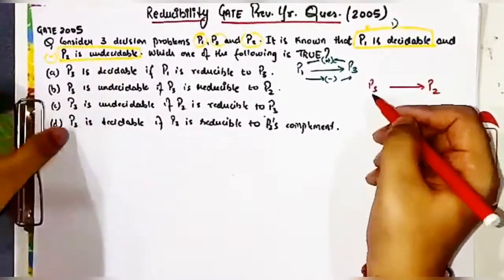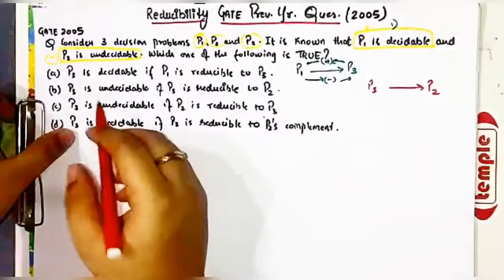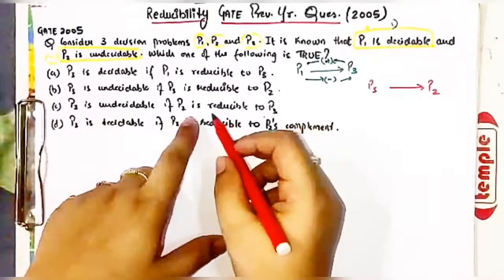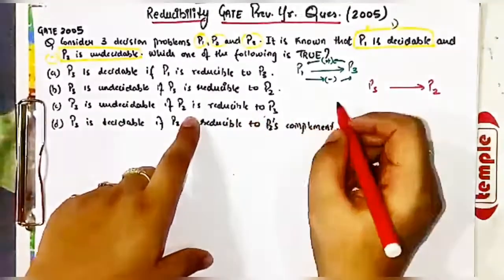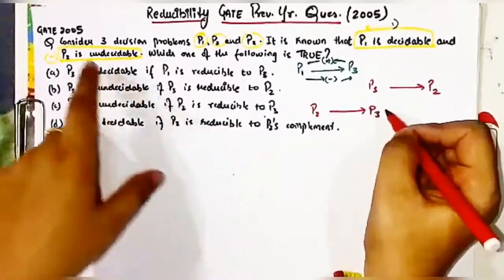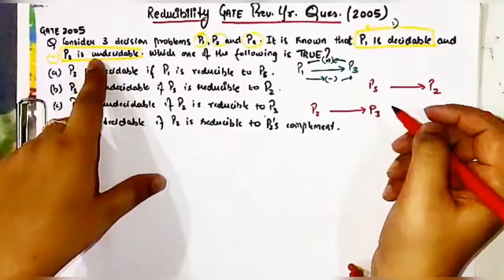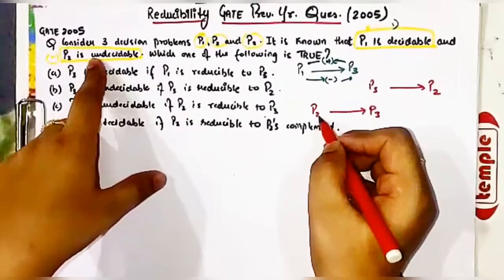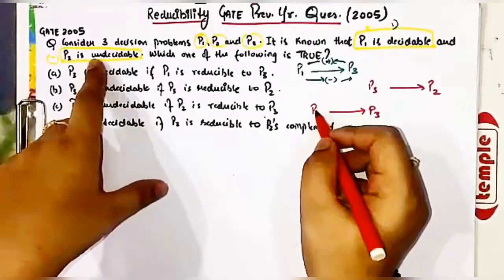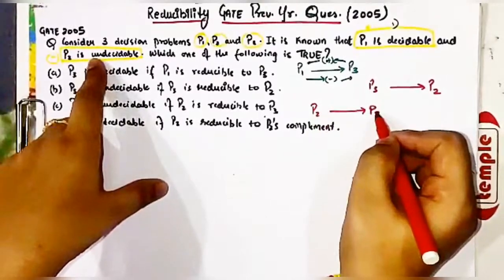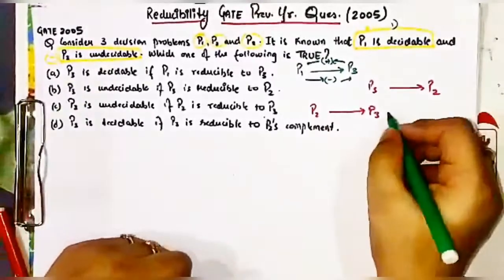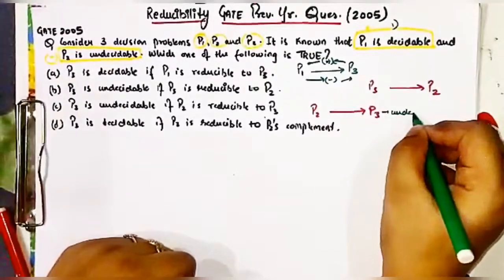In option C, it is given that P2 is reducible to P3, and P2 is undecidable. P2 is undecidable — that is a negative thing — and it will pass negativity towards P3. Therefore if P2 is undecidable and reducible to P3, then P3 will also be undecidable.